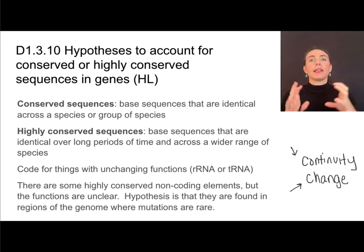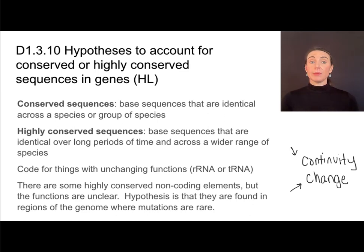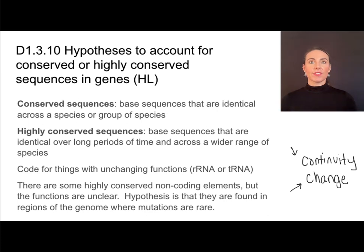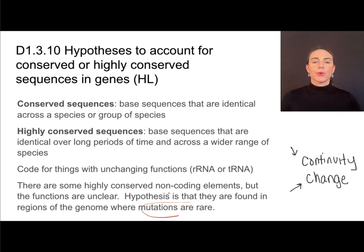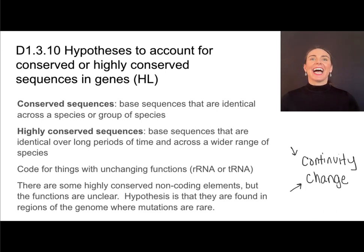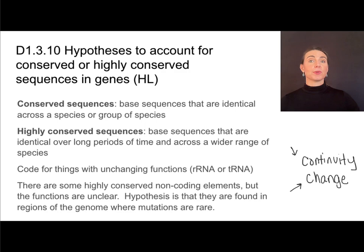There are also highly conserved non-coding elements whose functions are unclear — it's a mystery why they remain so highly conserved and why changes seem not to be passed along. They tend to be found in regions of the genome where mutations are rare, and there are several hypotheses linking back to their location. Genetic modification sounds like a lot of change, but it's a great idea to balance that with understanding how this can also result in continuity.